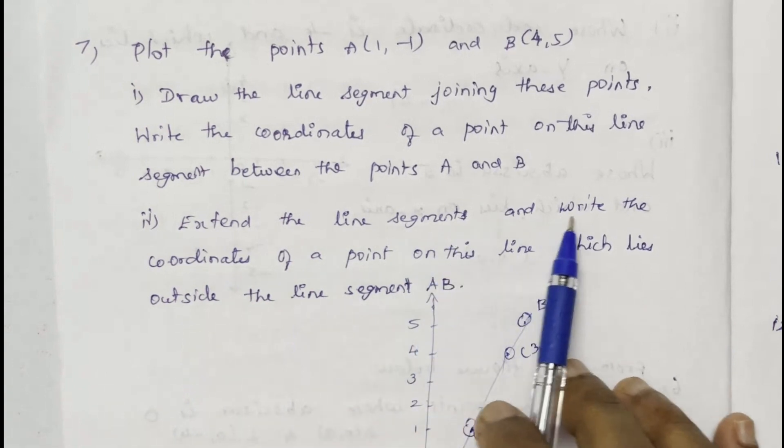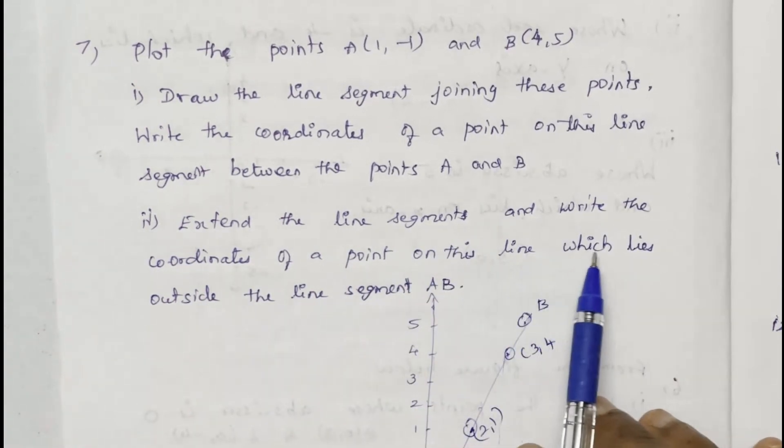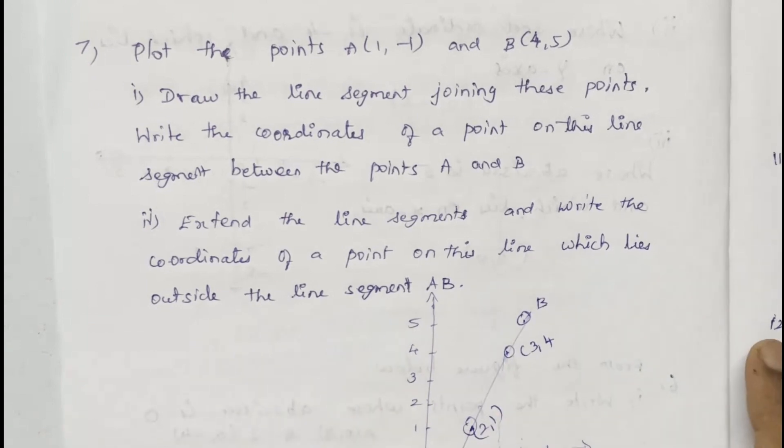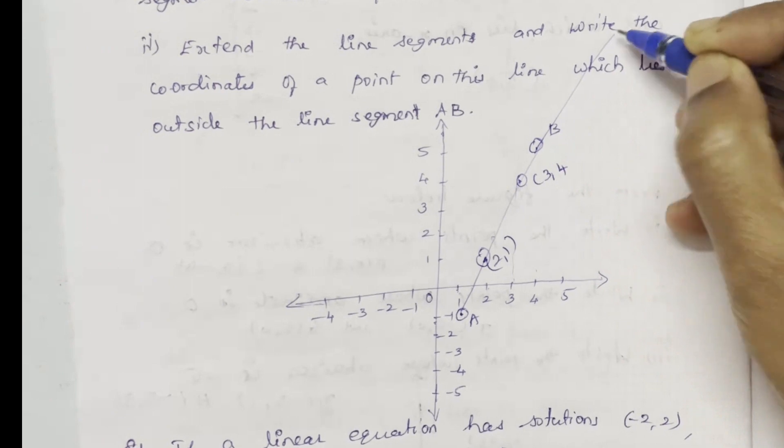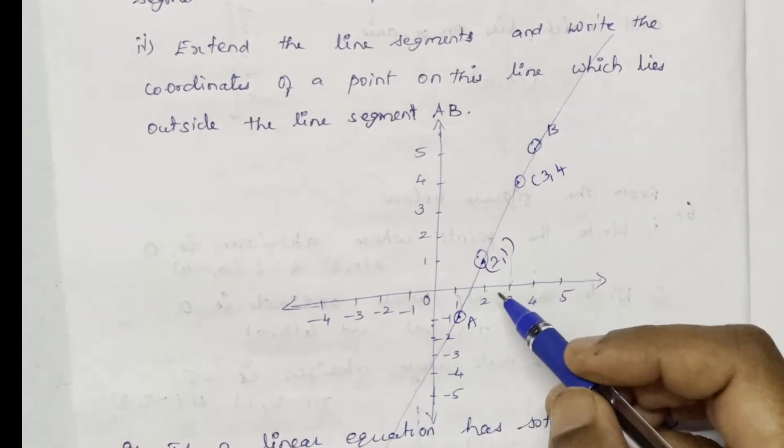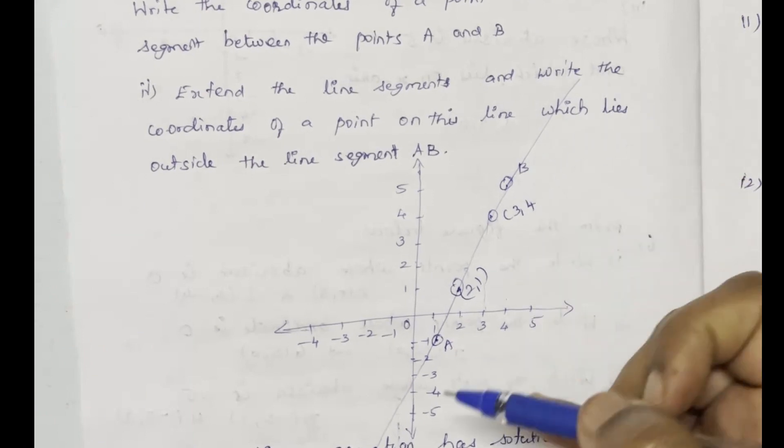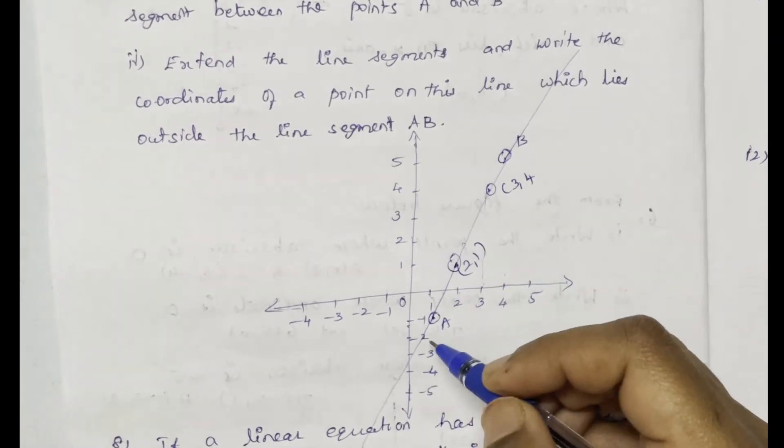Extend the line segments and write the coordinates of a point on this line which lies outside the line segment AB. So extend the line, outside. Let's do this. You can draw with a pen or pencil. Now, this is the point on the outside, this is the line.